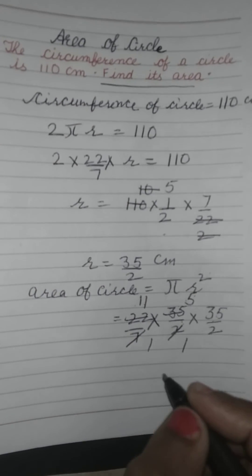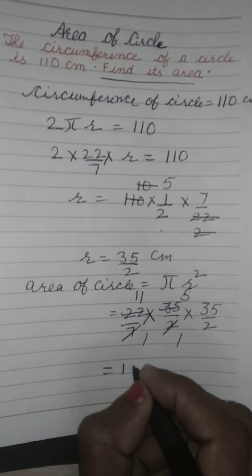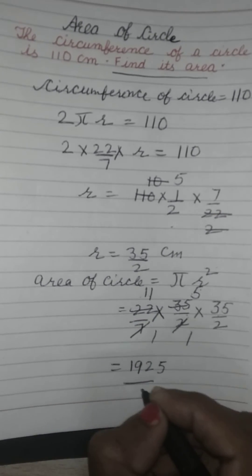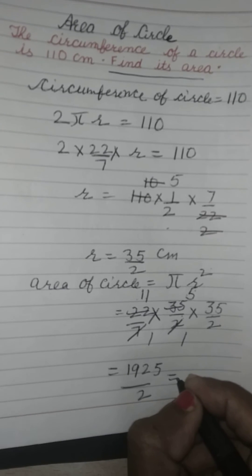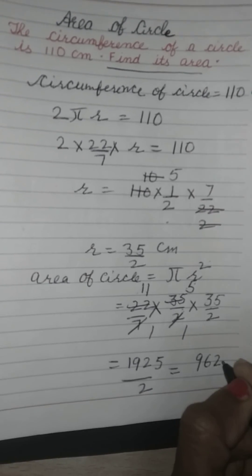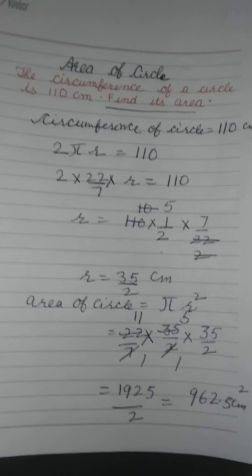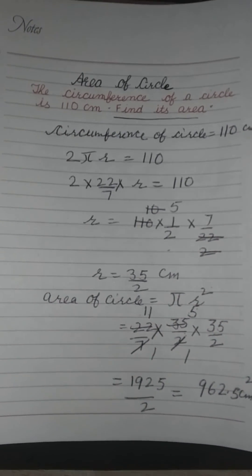So 55 multiplied by 35 is 1925, divided by 2 gives us 962.5 cm². This is the area of the circle.